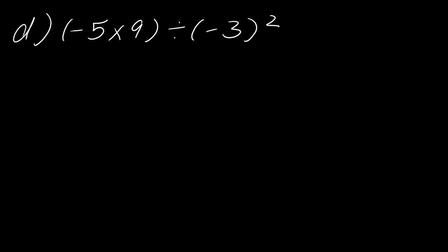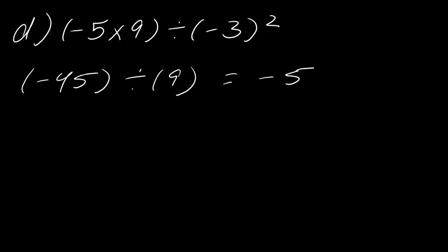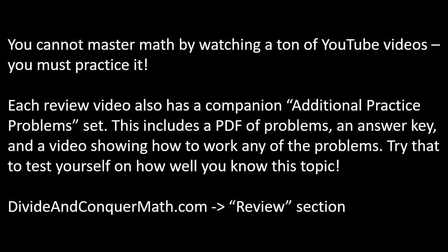For this final example, pause and give it a try, then hit play when you're ready. Going inside the parentheses: negative 5 times 9 is negative 45, divided by negative 3 squared — since it's in parentheses that's positive 9. So I just have negative 45 divided by 9, which equals negative 5. This one wasn't too crazy.